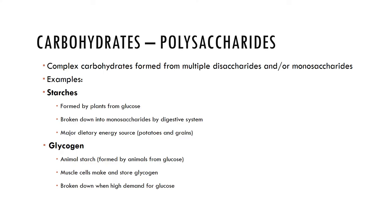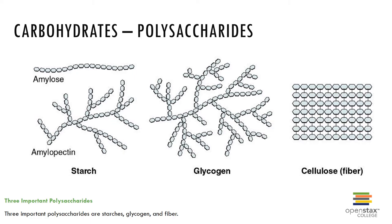Starch is mostly a straight chain and is the form of sugar storage in plants. Glycogen is the form of sugar storage in animals, found in liver and muscle cells. Cellulose is another polysaccharide, indigestible to humans and found in plant cell walls — we don't have the enzyme to break it down.